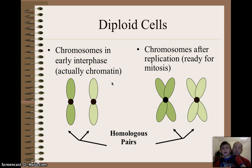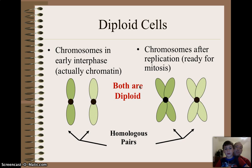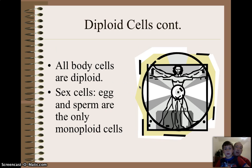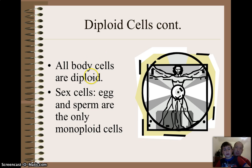Okay, so they have like two things? Yeah, absolutely. Now, all body cells — so arms, legs, toenails, nose hair — are diploid. Very good. Sex cells, which is eggs and sperm.